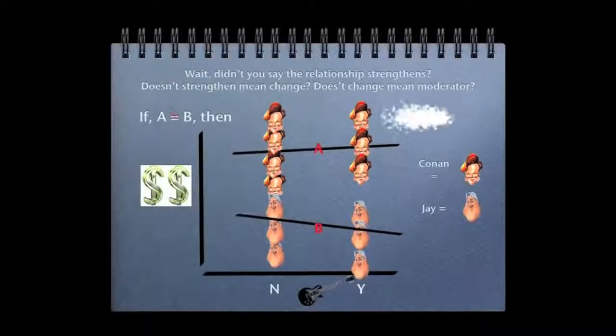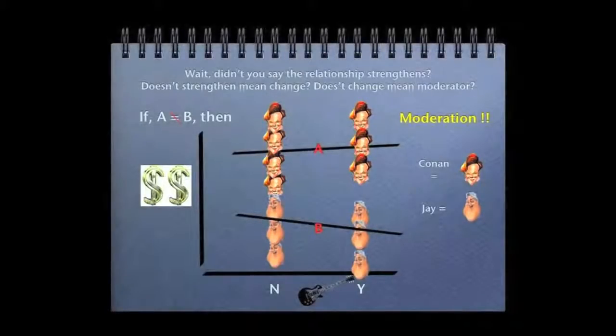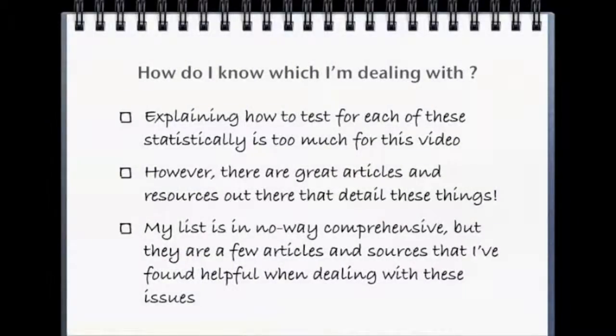So it could be said that when A does not equal B, in this case A and B equaling slopes, you have a significant moderator. Now knowing the difference between mediators, moderators, and suppressors is only the first step. The next step is testing for them.